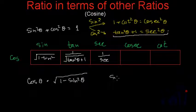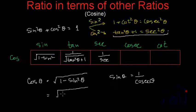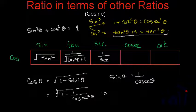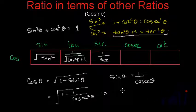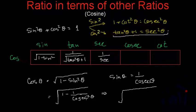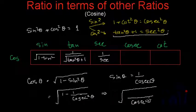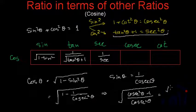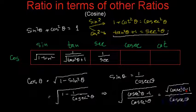We know that sine theta equals 1 by cosec theta. Substituting this into the formula gives square root of 1 minus 1 by cosec squared theta. Taking the LCM under the square root, this becomes square root of (cosec squared theta minus 1) divided by cosec theta. So cos theta in terms of cosec is square root of (cosec squared theta minus 1) divided by cosec theta.